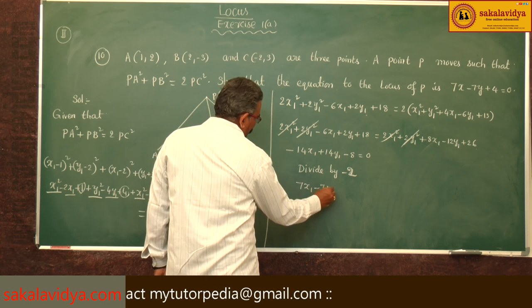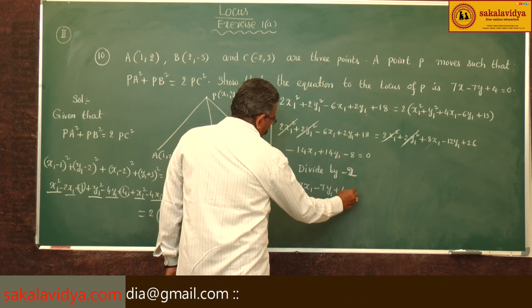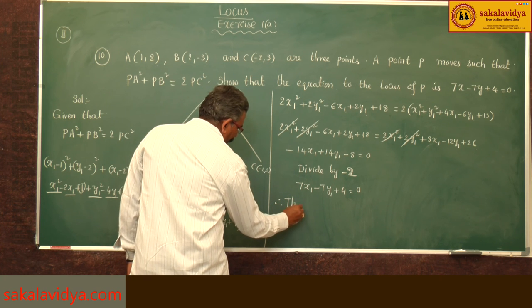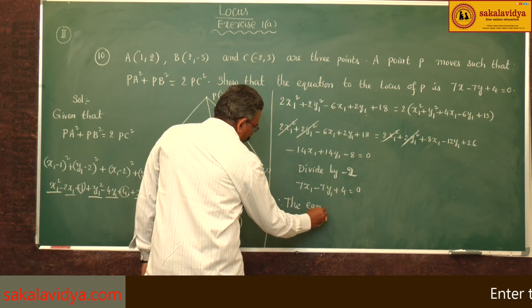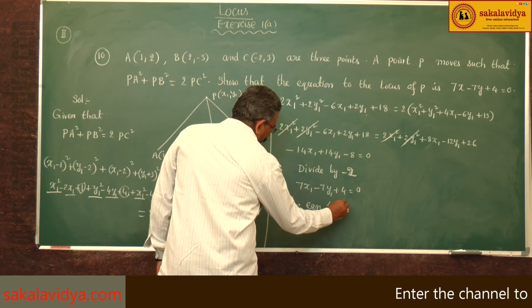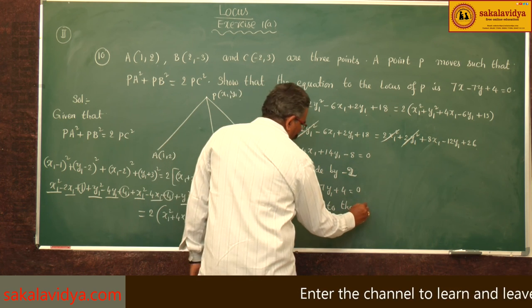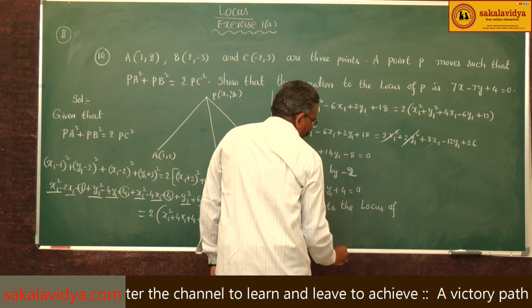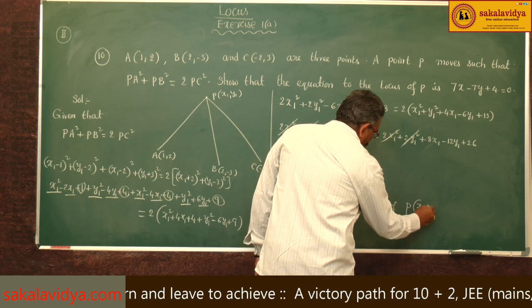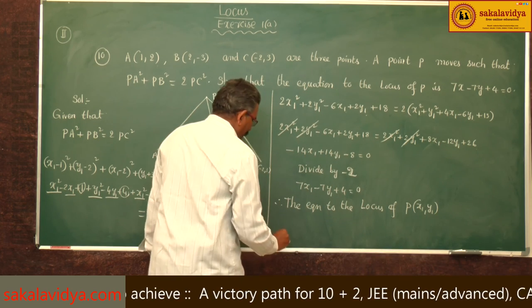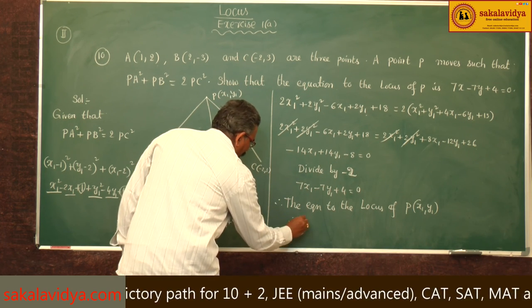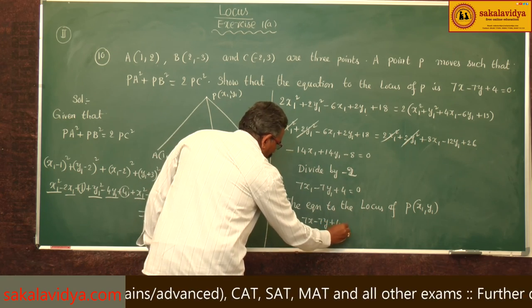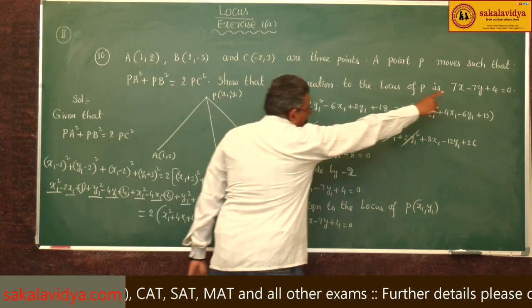Therefore, the equation to the locus of P(x₁, y₁) is 7x - 7y + 4 = 0. Hence, it is proved.